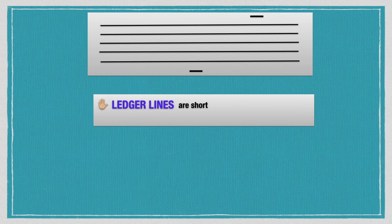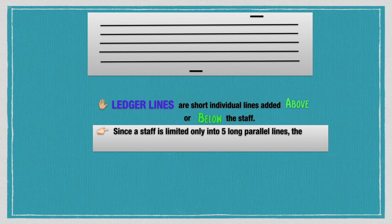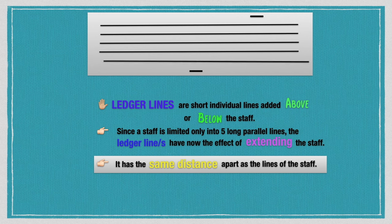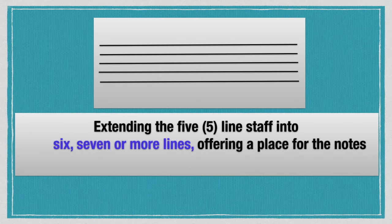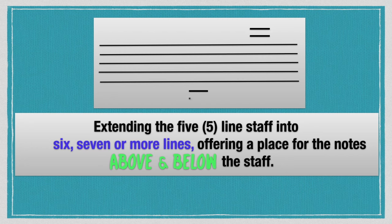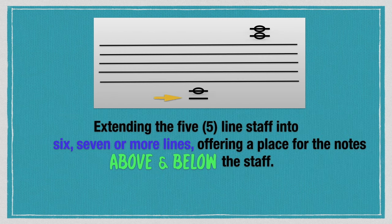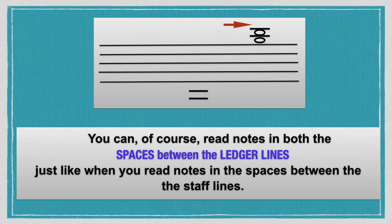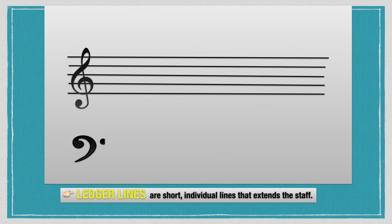Ledger Lines are short individual lines added above or below the staff. Since the staff is limited to only five long parallel lines, Ledger Lines have the effect of extending the staff. They have the same distance apart as the lines of the staff, extending it to six, seven, or more lines, offering a place for notes above and below each staff. You can also read notes in the spaces between ledger lines, just like notes in the spaces between staff lines.